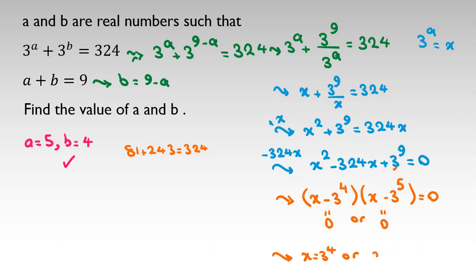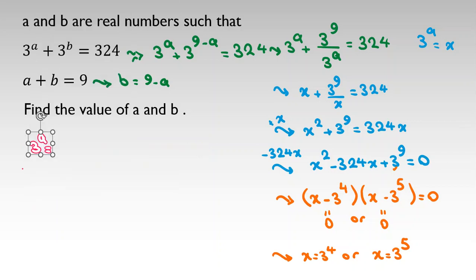So either x equals 3 to the 4, or x equals 3 to the 5. Since x equals 3 to the a, we have 3 to the a equals 3 to the 4 in the first case, or 3 to the a equals 3 to the 5 in the second case.